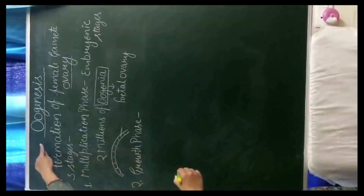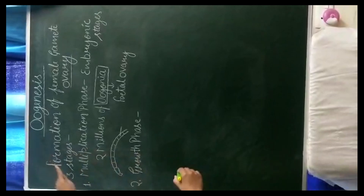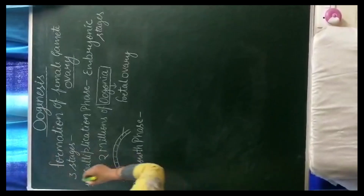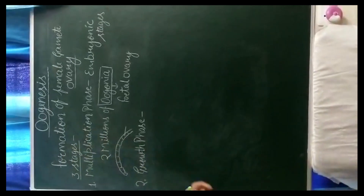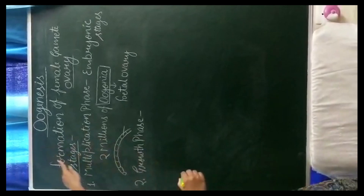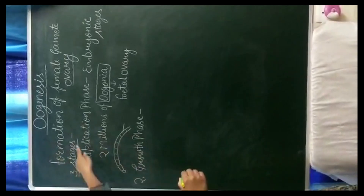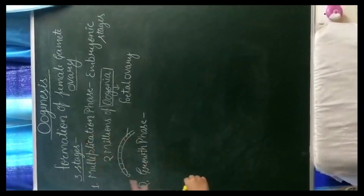This whole process occurs in three stages, or it can be divided into three stages: the multiplication phase, the growth phase, and third is the maturation phase.